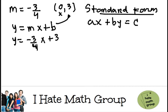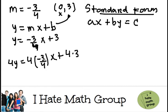I'm going to multiply every single term by 4, so I'm going to have 4y equals 4 times negative 3 over 4x plus 4 times 3. You cannot do it to only one term. You have to do it to every single one.